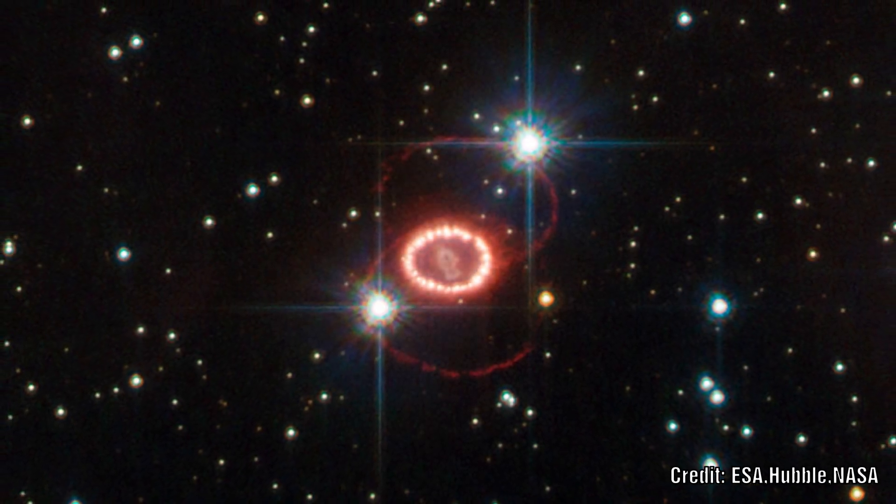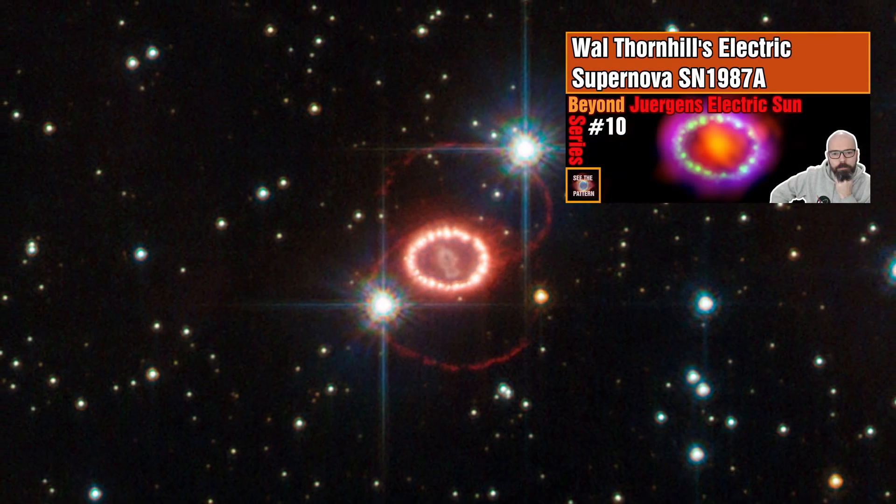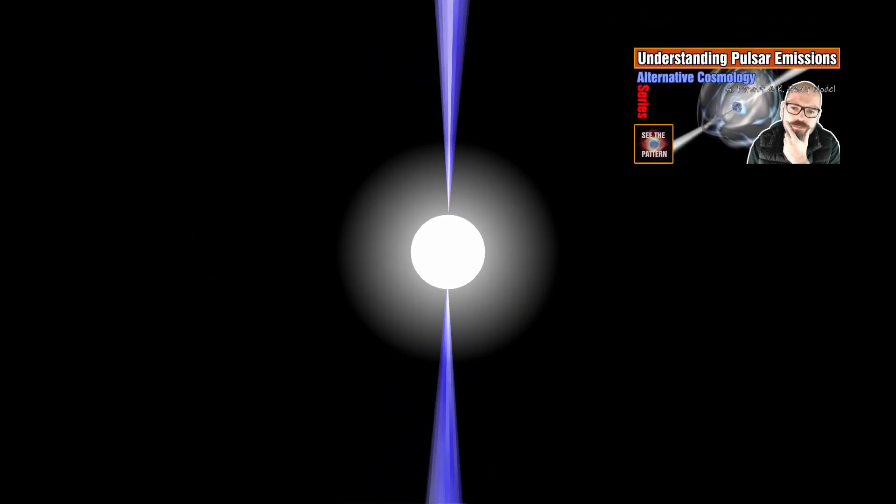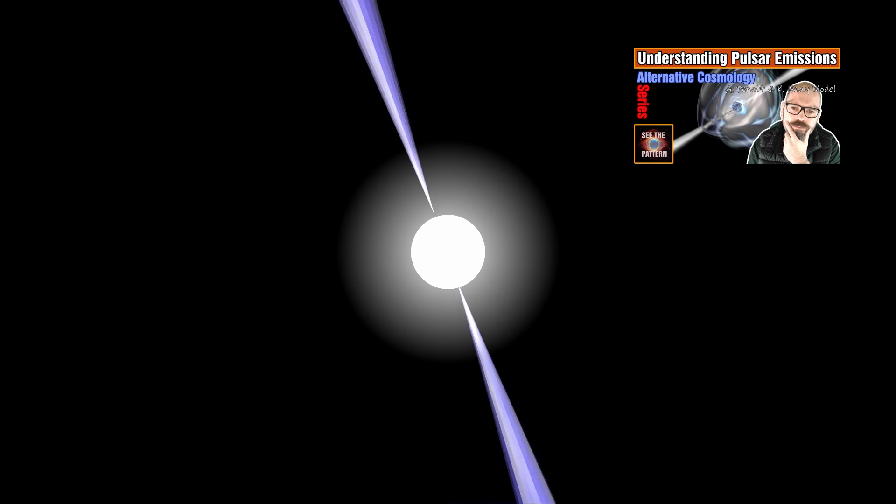I've recently covered the supernova SN 1987A and how this could be interpreted in a totally different way by looking at Thornhill's concept of electric stars and what happens when they go supernova. We've also covered Peratt's concept of pulsars and seen that these can also sometimes be left as remnants of supernova explosions.